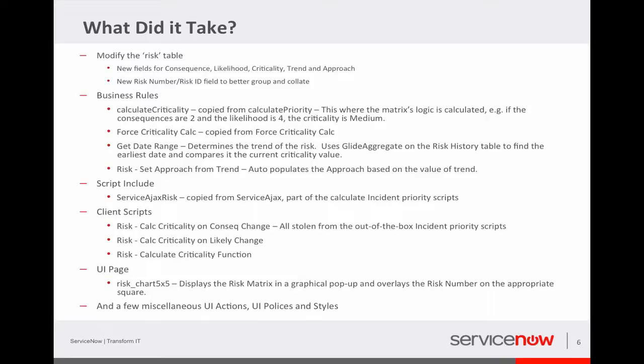Now the business rules that I modified—again, I was able to steal a lot of the code from the calculate priority applications, and I did that. You know, our founder Fred Luddy likes to say that good artists copy, great artists steal, but big fan of that and that's why I took that approach. The second business rule you see there is force criticality count—that's included in that as well. My get date range business rule, so what that's gonna do is go through the risk history.